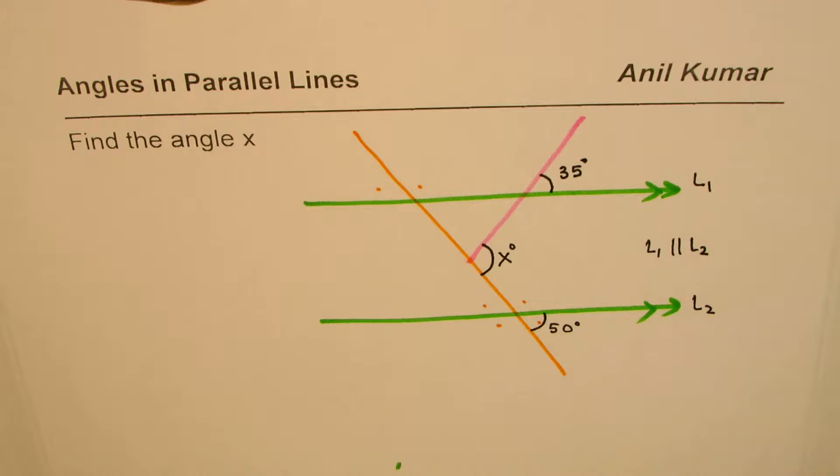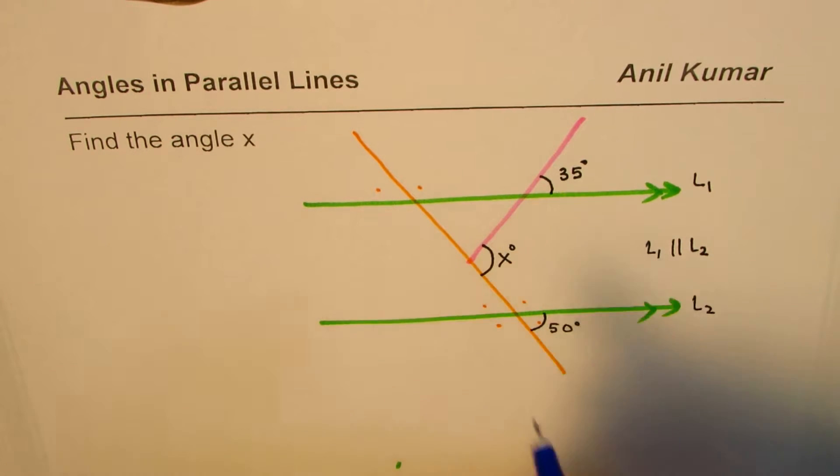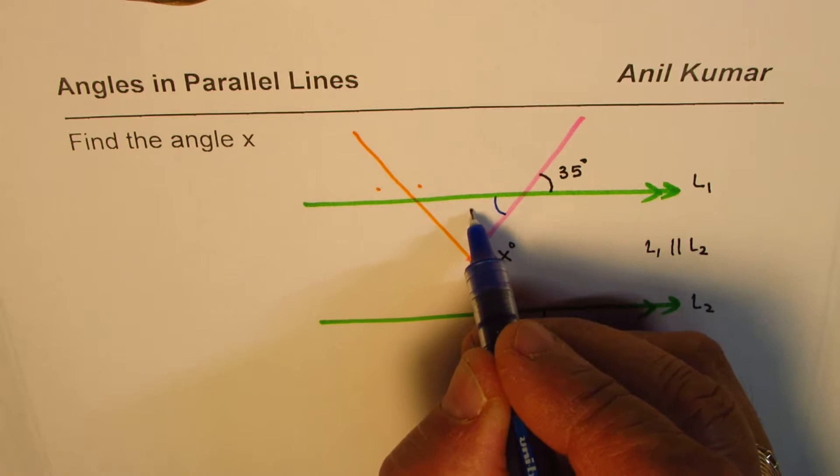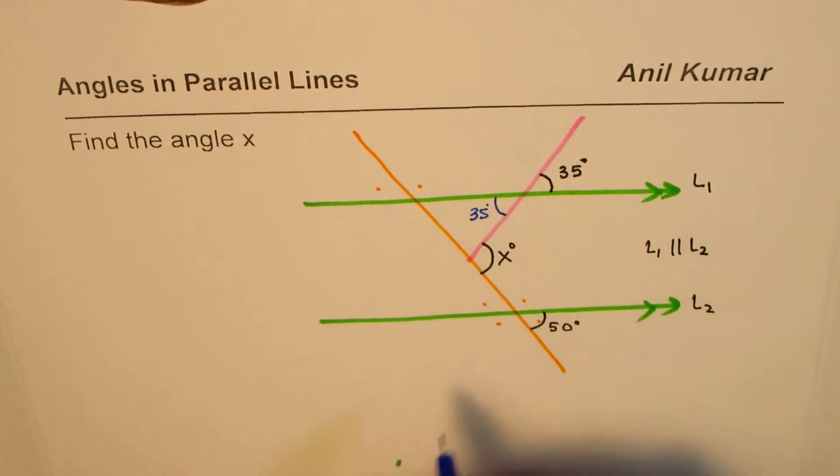Now let us see how to figure this out. So you can pause the video, answer the question, and then check with my solution. Okay, now from the given situation we are given this angle is 35, that means vertically opposite angle should be equal, so this angle is also 35 degrees.